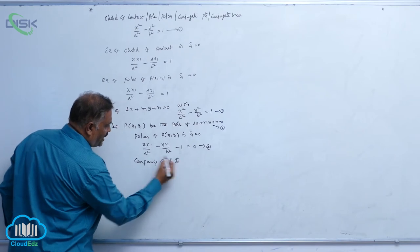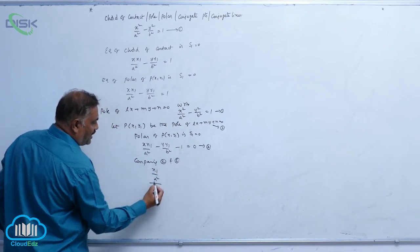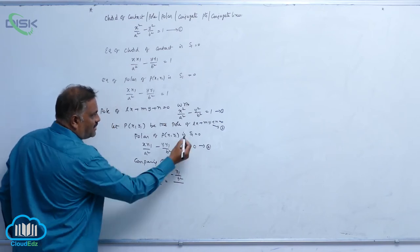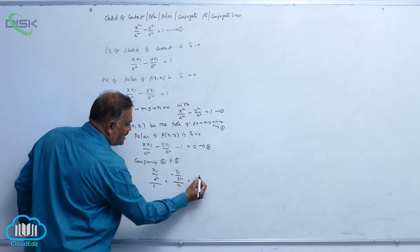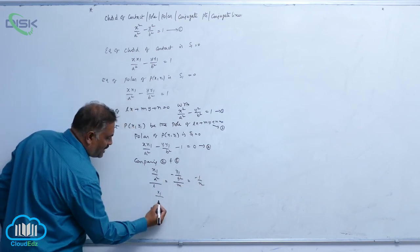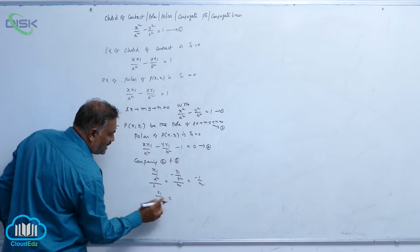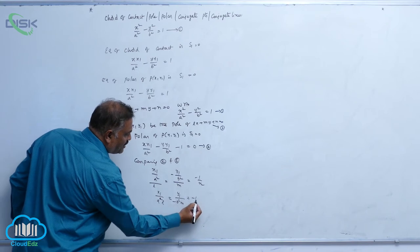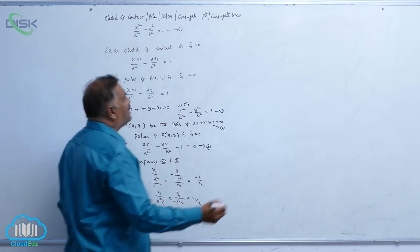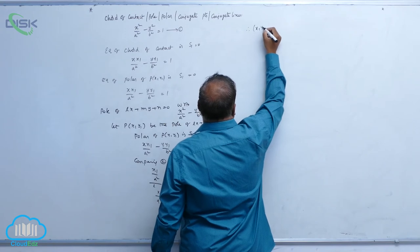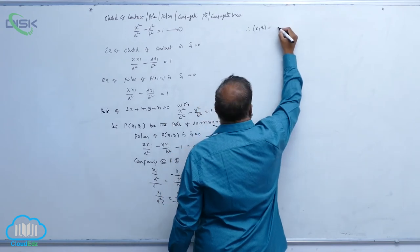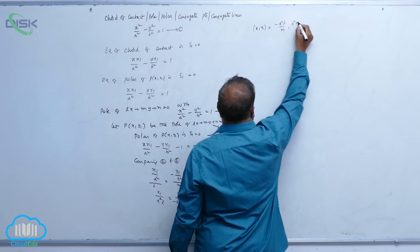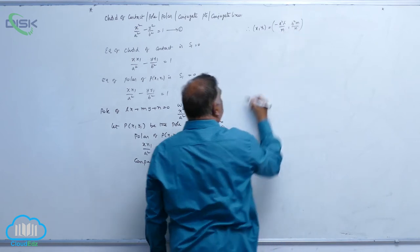So what do we get? x1 by a square divided by l is equal to minus y1 by b square divided by m, equal to minus 1 by n. Therefore x1 by a square l equals y1 by minus b square m equals minus 1 by n. Therefore the pole coordinates (x1, y1) are given by minus a square l by n, b square m by n.